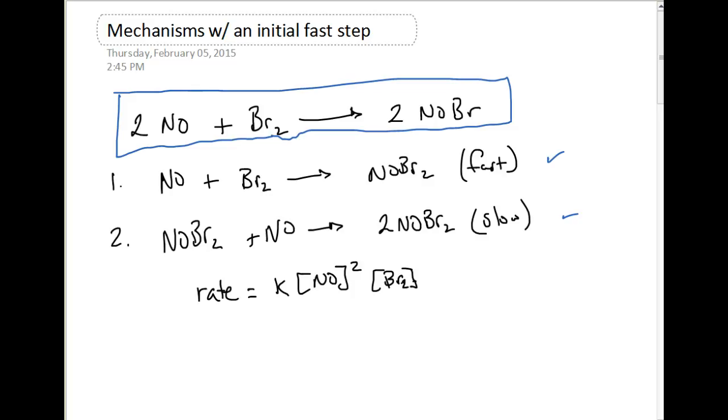First off, we always know that rate laws are based off our slow step. When we look at our slow step here, we have NOBr2 as a reactant and we have NO as a reactant, but that doesn't match our rate law, so there must be something else at play here.